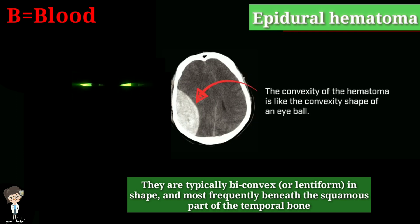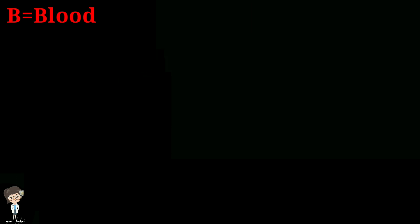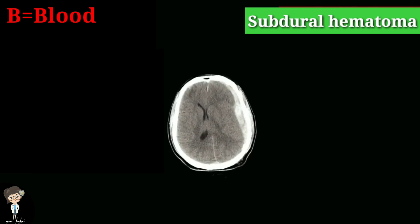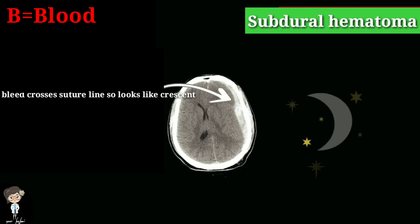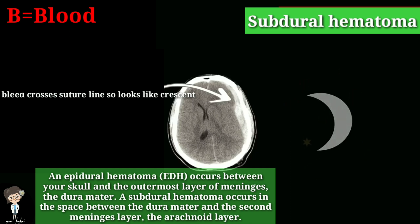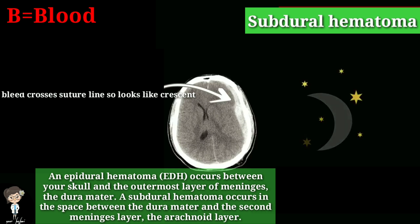Epidural hematoma is usually beneath the squamous part of the temporal bone. Second is subdural hematoma, which is thin crescent-like in shape and occurs in the space between the dura mater and the arachnoid layer, which is the second meningeal layer, while epidural hematoma is seen between the skull and dura mater, which is the outermost meningeal layer.